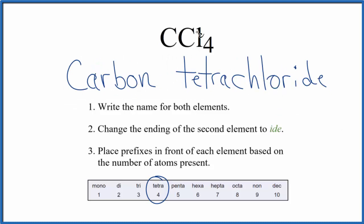If you were given this name and asked to write the formula, you'd know there'd be one carbon and four chlorine atoms, CCl4.